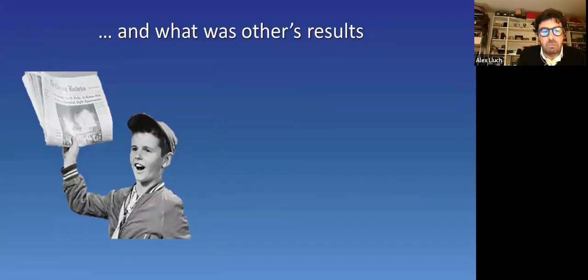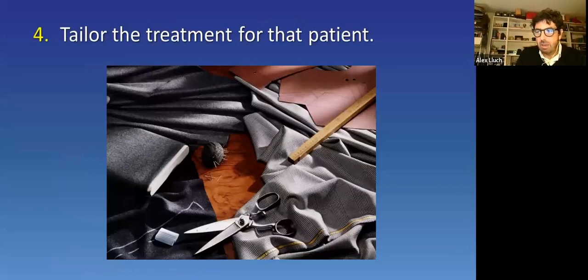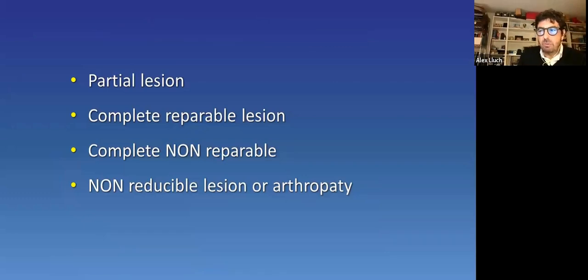And here we have a problem with scapholunate surgery publications. Look at the conclusions of the evidence-based chapter written for the FESSH meeting three years ago. The evidence is suboptimal. The number of patients were small. It's very difficult to allow a meta-analysis. I think anything has changed from that point. With all this information, we have to tailor the treatment for that patient. These are the four scenarios that we will describe.